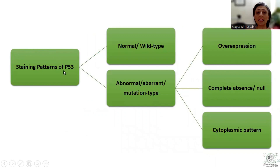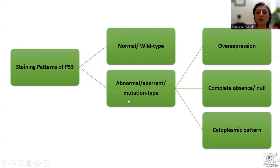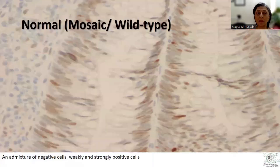To start with, remember that staining patterns of P53 in general are divided into what is known as the normal or wild-type staining pattern — so wild-type is equivalent to normal — or the abnormal, apparent, or mutation-type staining pattern. This further can be expressed in the form of overexpression, complete absence, or cytoplasmic pattern of staining. These three comprise what is known as the abnormal or apparent or mutation-type staining pattern.